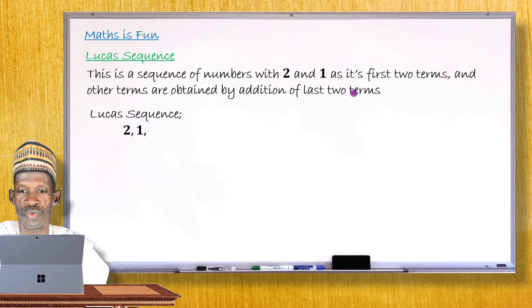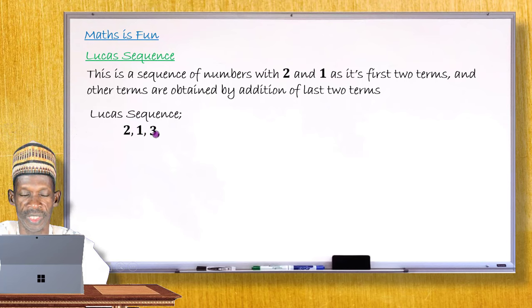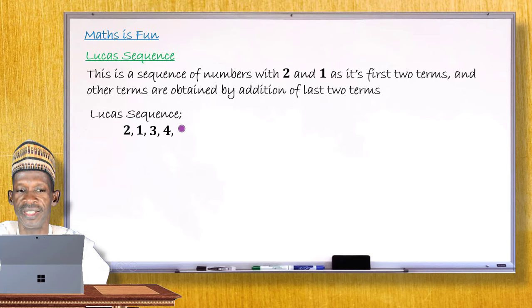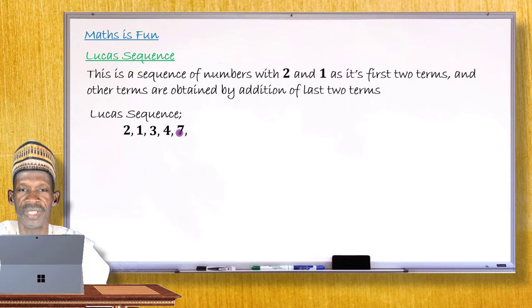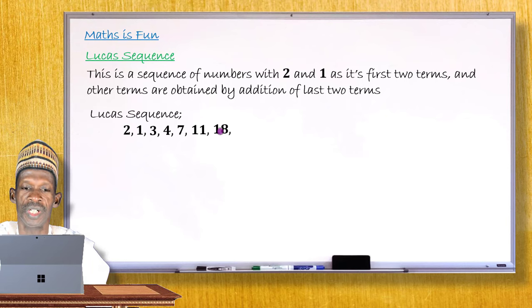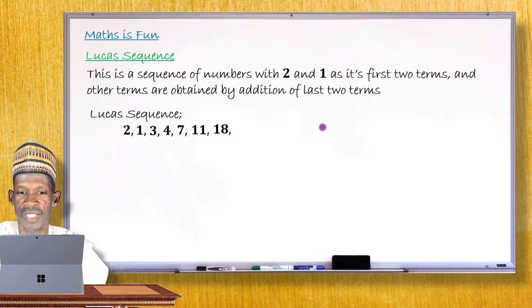To generate the Lucas sequence: the first two terms are 2 and 1. Adding 2 and 1 gives 3, so term number 3 is 3. Adding the last two terms, 1 and 3, gives 4 — the fourth term. Adding 3 and 4 gives 7 — the fifth term. Adding 4 and 7 gives 11, then adding 7 and 11 gives 18. The sequence so far is: 2, 1, 3, 4, 7, 11, 18. Adding 11 and 18 gives 29 as the next term.